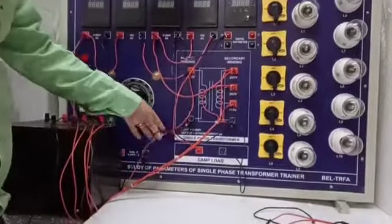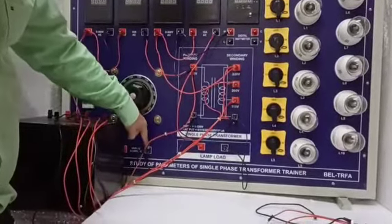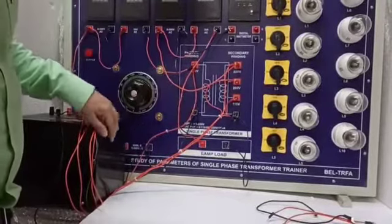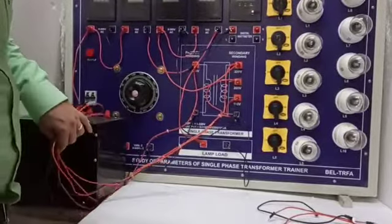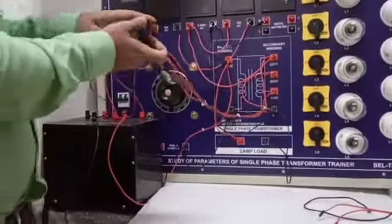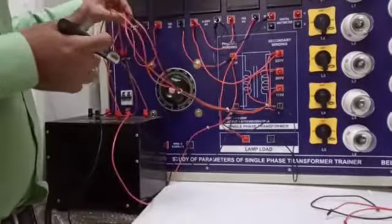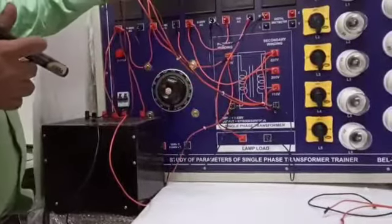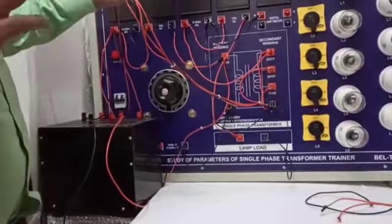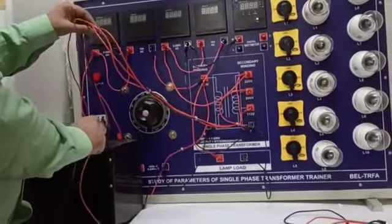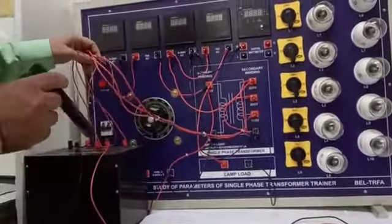Here we have shorted the neutral of the variac to the neutral of the transformer. First of all, it is very important to understand that with this cable, all the 6 wires as shown here should be connected 1 to 1 to the panel. Otherwise, this panel will not work. If there is any connection, then this transformer will be damaged.